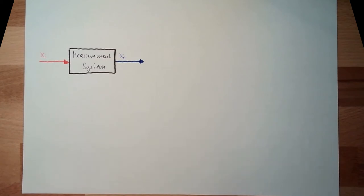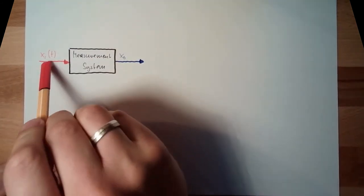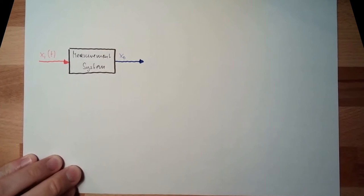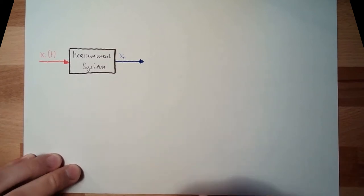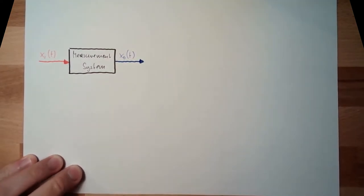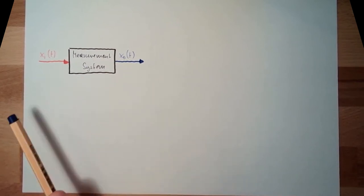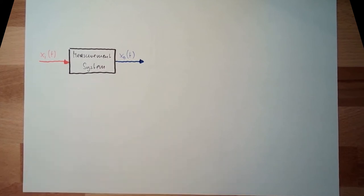And now we want to see what's happening if this XI is changing over time. So if this XI is a function of time, then of course this XO is also changing over time. The issue now is that this output cannot follow the input in zero time. It simply takes some time until the output is following the input.